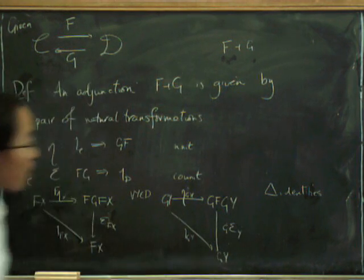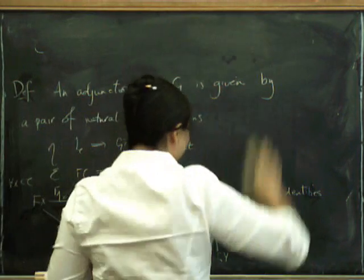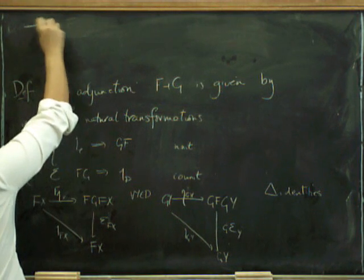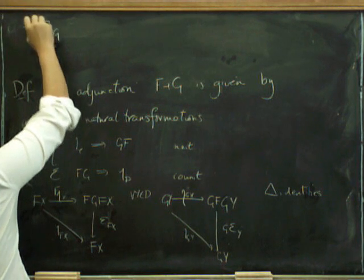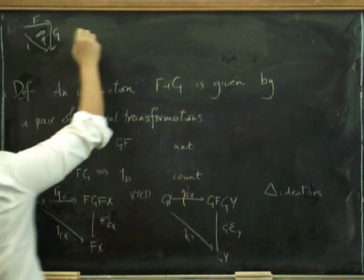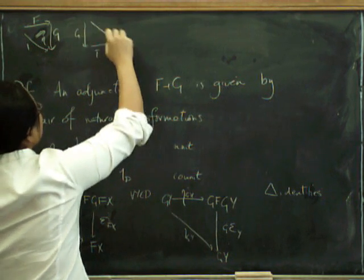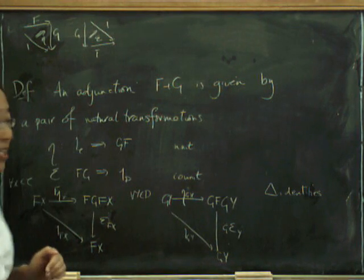Now, there is another way of thinking about these if you happen to like two categories and diagrams of two cells, because you can write eta and epsilon actually as two cells. So here's eta, that's F and that's G. Here's one, as an actual two cell, and here's epsilon, as an actual two cell. Hopefully I got those the right way around.